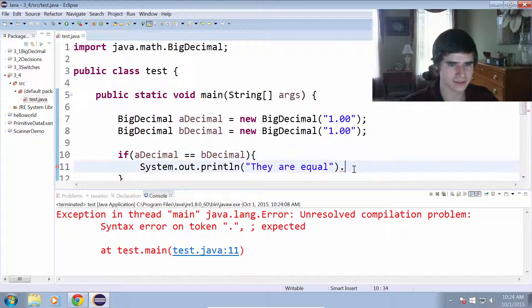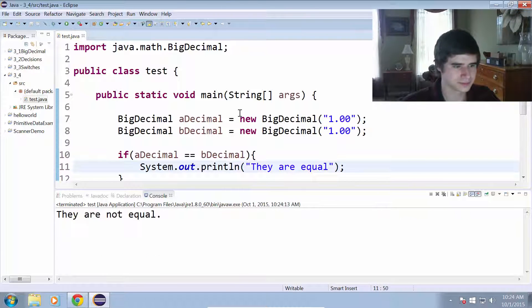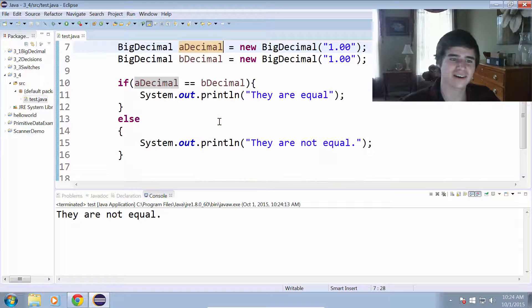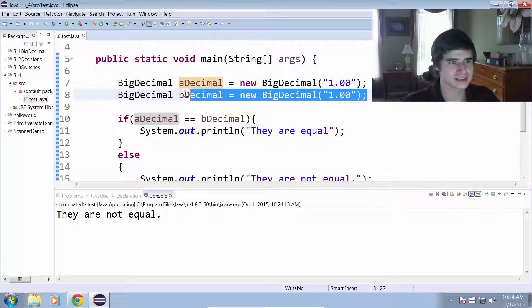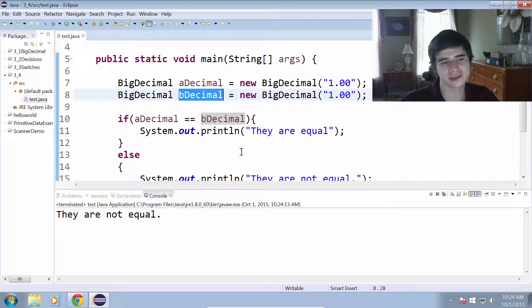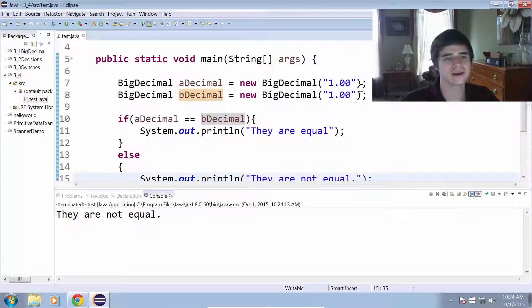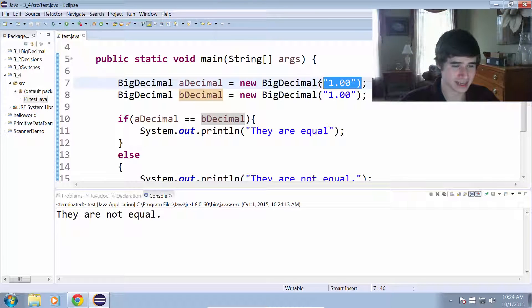Okay, did I forget something? Aha, there we go. Alright, so it says they are not equal. And that is, like I said, because aDecimal is a separate object than bDecimal, so it's going to say that they are not equal, even though they have the same exact value.